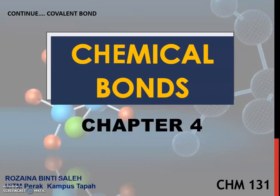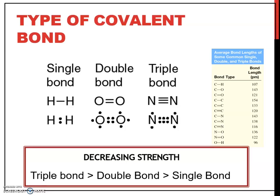Next we continue with covalent bonds. There are several types of covalent bonds such as single bond, double bond, and triple bond. For a single bond, represented by one line, there are two electrons in one bond here.